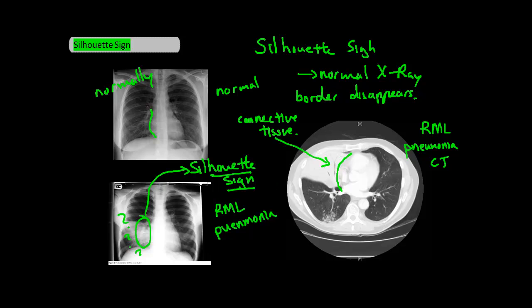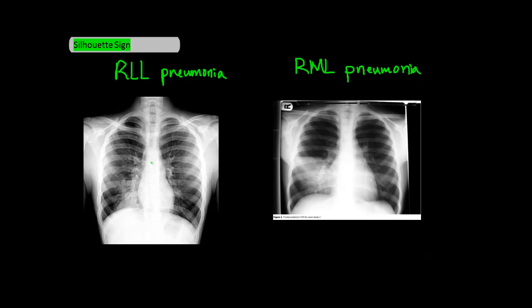Now for fun, let's take a look at a right lower lobe pneumonia in comparison to the right middle lobe pneumonia we just looked at. They're about in the same position, but notice that the right heart border is still visible with the right lower lobe pneumonia, but disappears with the right middle lobe pneumonia — the silhouette sign. If you understand the silhouette sign, you should know why: it's the right middle lobe that's in contact with the right heart border, not the right lower lobe.